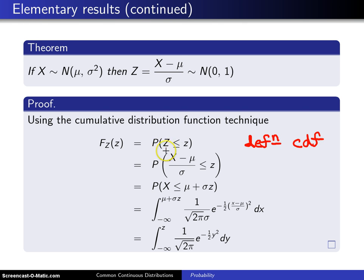Next, if you replace capital Z by x minus mu divided by sigma, and that of course is true by the definition of capital Z, you wind up with this probability.